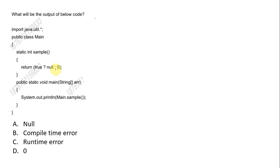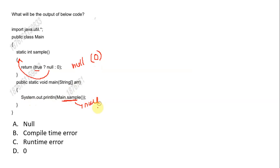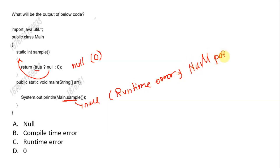Here we have a question from Java. We have a static int sample method with a ternary operator — if true, it returns null. So static int sample is going to return null. We know internally null is treated as 0. We are trying to access main.sample, which is trying to access null. When we try to access null, we get a runtime error — specifically a NullPointerException. So the answer is option C: it will get a runtime error.